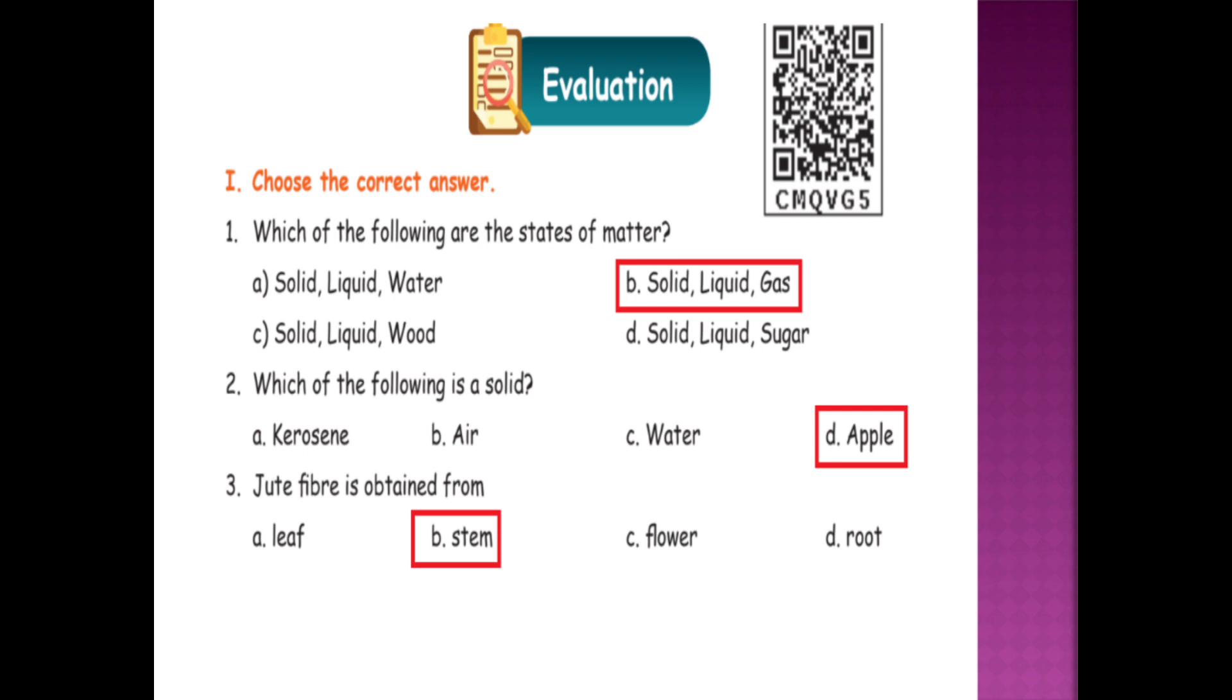Which of the following is a solid? Kerosene, air, water, apple. Apple. Jute fiber is obtained from leaf, stem, flower, root. Stem.